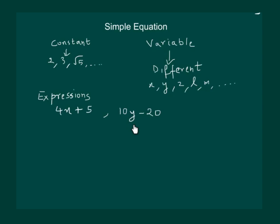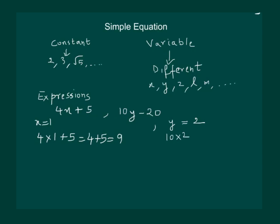The value of the expression formed depends upon the chosen value of the variable. That means suppose we take x equal to 1, then the value of 4x plus 5 will be 4 into 1 plus 5, which is equal to 4 plus 5, which is equal to 9. Similarly, by choosing some value of y, say y equal to 2, we can get the value of the expression 10y minus 20: that will be 10 into 2 minus 20, which is 20 minus 20, and it comes out to be 0.